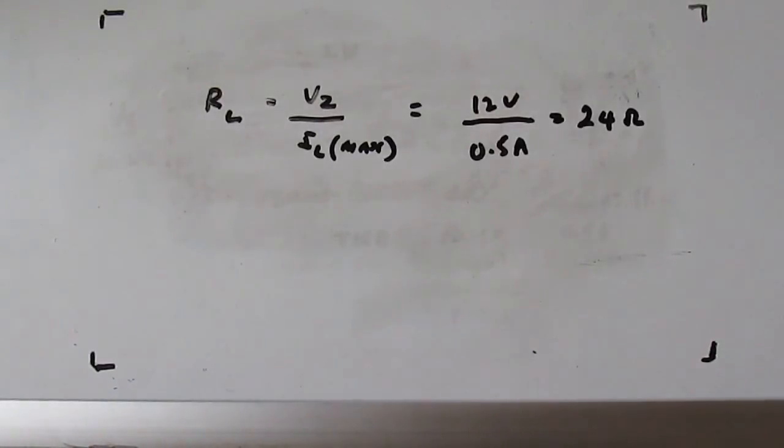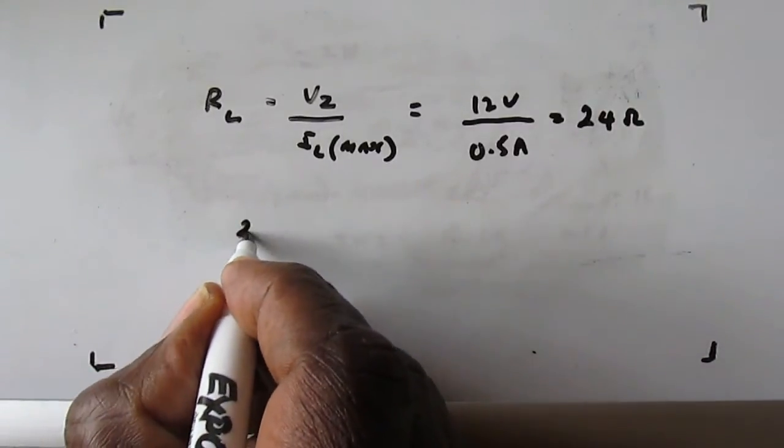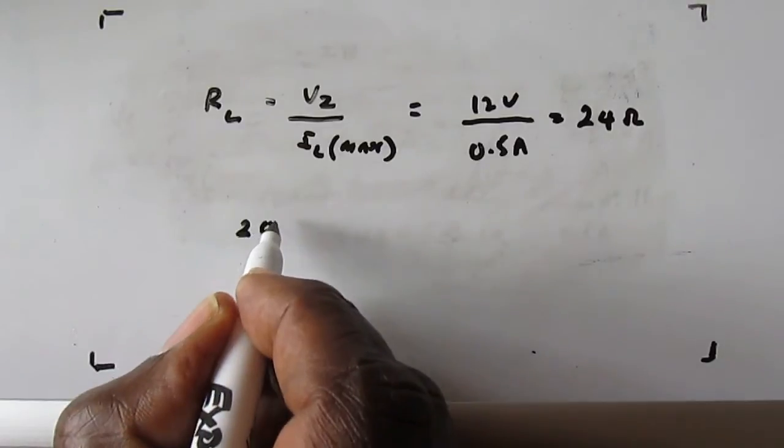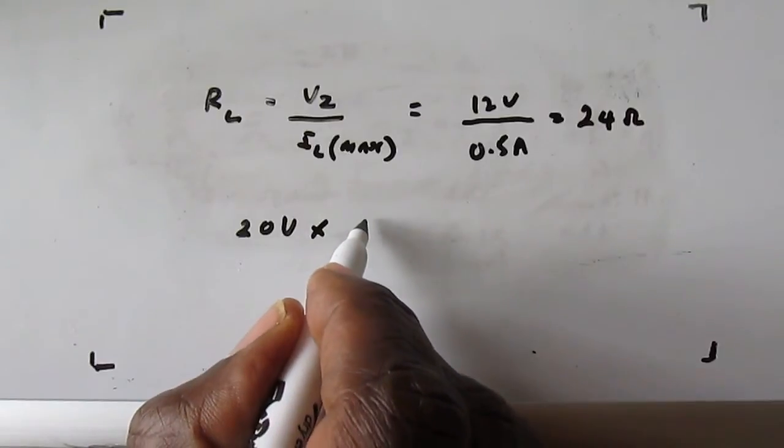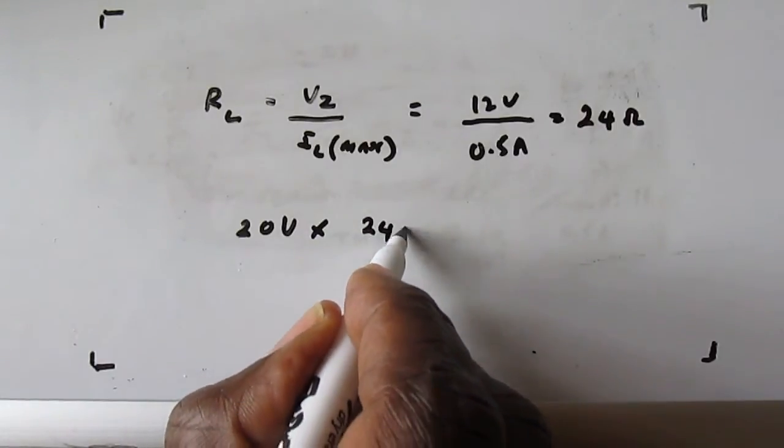So that would be the value of the load resistance. Now we are going to use Thevenin voltage method to check using the minimum voltage of the supply. So the Thevenin voltage across the Zener diode would be 20 volts multiplied by the load resistance, 24 ohms,